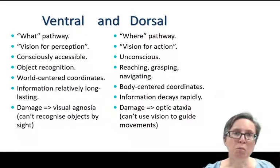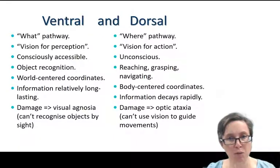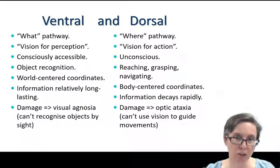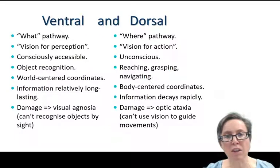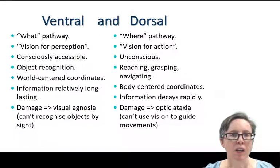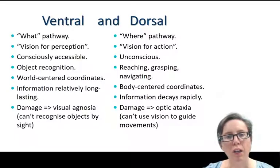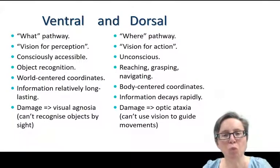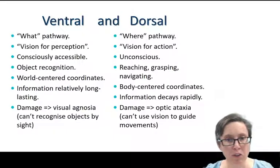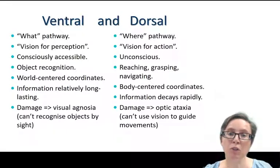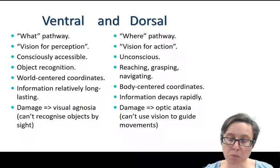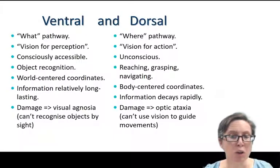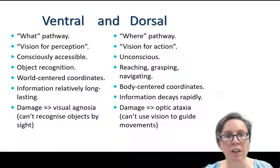This is still very much up for debate and controversial. People still argue about exactly what the ventral and dorsal pathways do, and there are certainly strong links between them — they're constantly talking to each other and not happening in isolation. But the key takeaway is that vision isn't one entity; it consists of many modules, and it's possible to damage one aspect like motion perception or object recognition while leaving others intact — which is quite surprising and counter-intuitive.